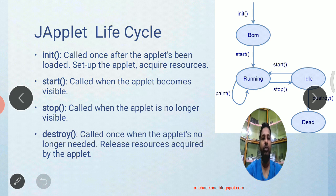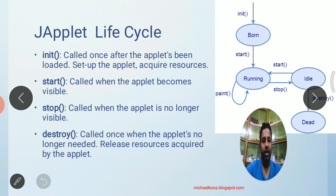The init method will be called at the start of the applet's execution and will be called only once. It is used for loading and acquiring resources. The start method is another lifecycle method and will be executed whenever the applet starts its execution. If the applet is not visible but still running, stop will be executed. For example, when the user minimizes the window, stop is called.